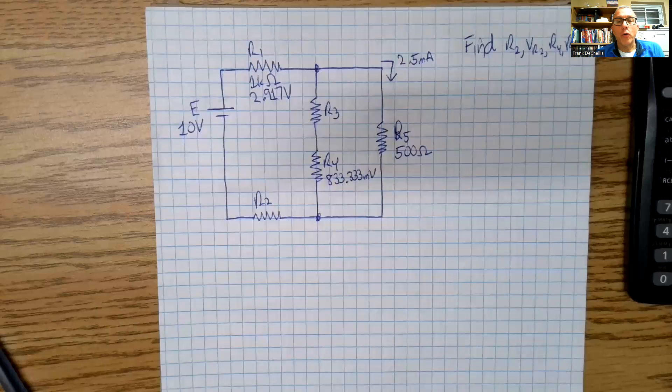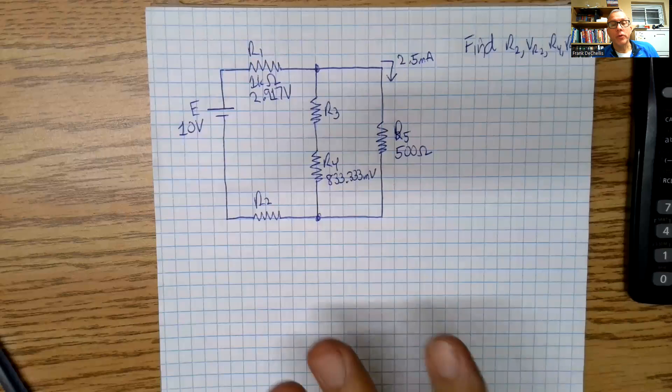Hi, everybody. I just wanted to go over an example with a series parallel circuit on working backwards when you don't have all the values.